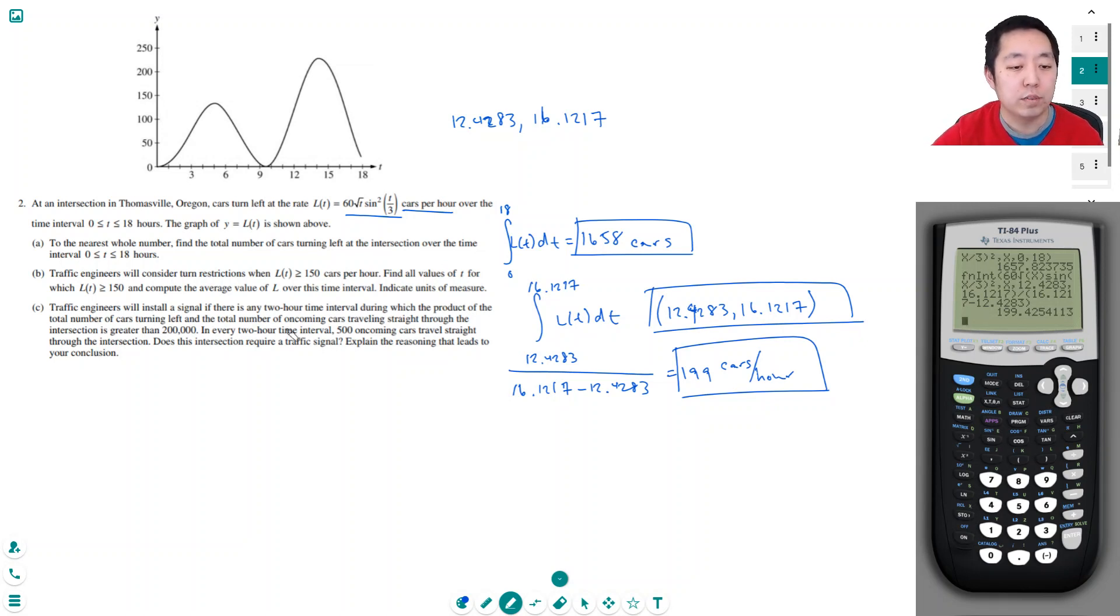Traffic engineers will install a signal if there's any two-hour time interval during which the product of the total number of cars turning left and the total number of oncoming cars traveling straight through the intersection is greater than 200,000. In every two-hour time interval, 500 oncoming cars travel straight through the intersection. Does this intersection require a traffic signal?